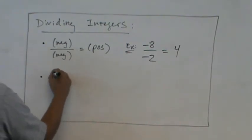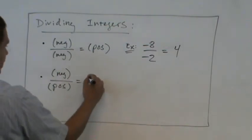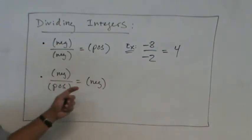And a negative and a positive equals a negative. Very good. So a negative with positive is negative.